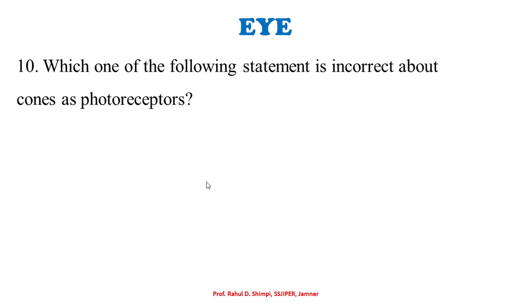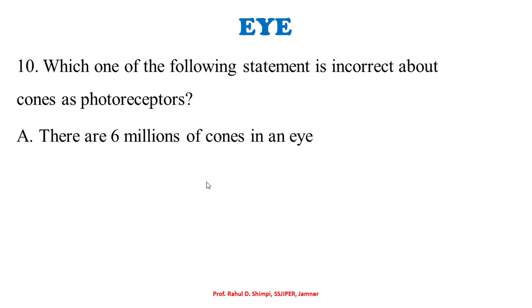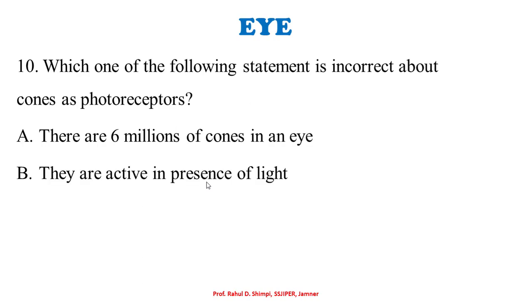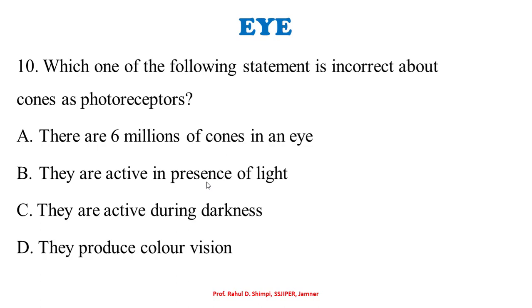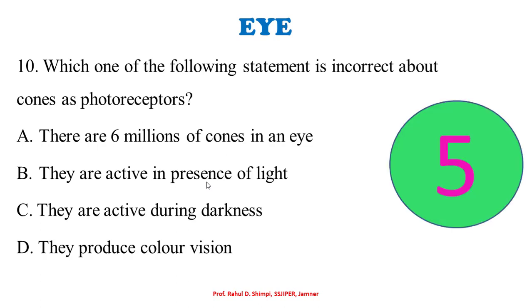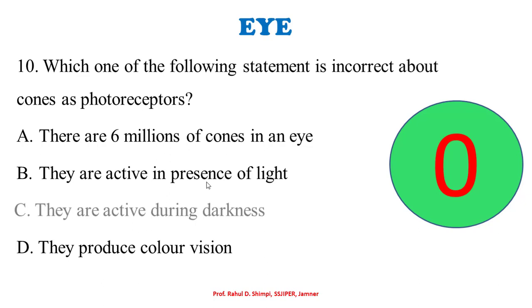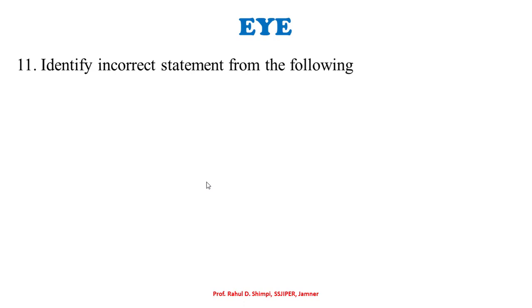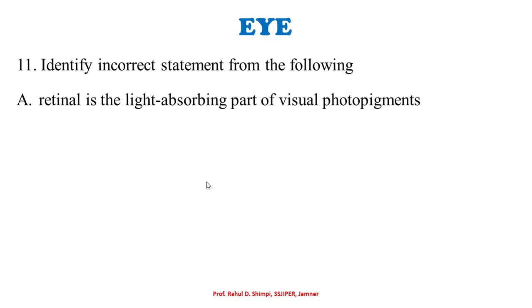Which one of the following statements is incorrect about cones as photoreceptors? A: there are six million cones in an eye. B: they are active in the presence of light. C: they are active during darkness. D: they produce color vision. The correct option is C — they are active during darkness — which is incorrect. Options A, B, and D are all correct.